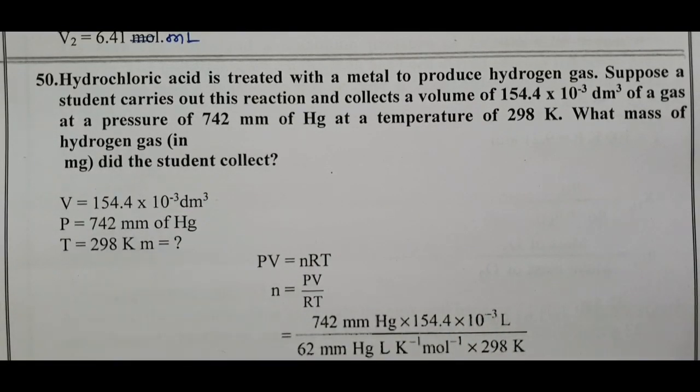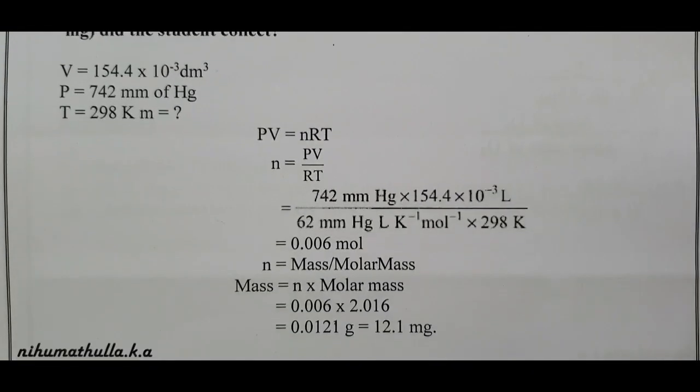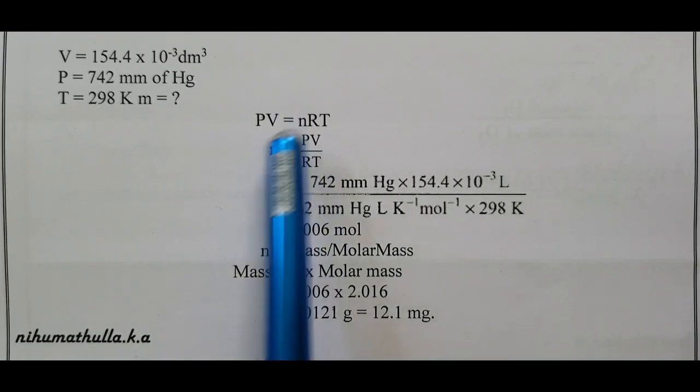Volume value is 154.4 into 10 power minus 3 decimeter cube. Pressure value 742 millimeter of mercury. Temperature 298 Kelvin, approximately equal to 300. PV equals nRT, ideal gas equation. N equals PV by RT.